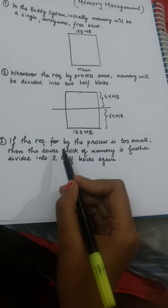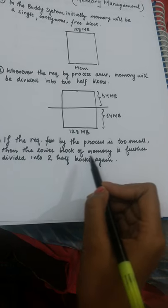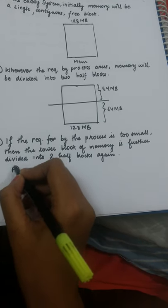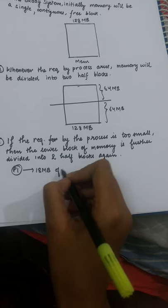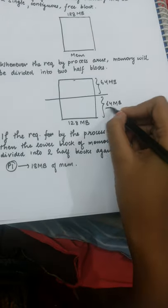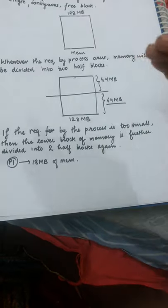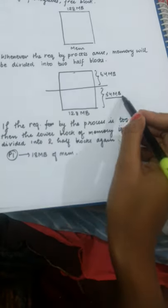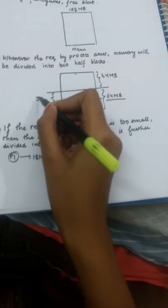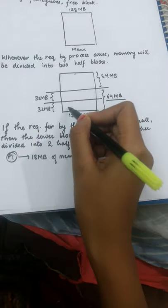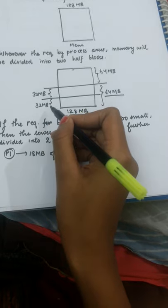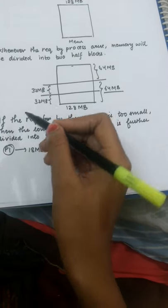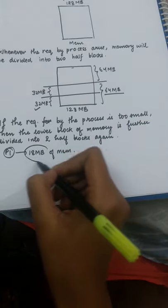The third point is that if the request by the process is too small, then the lower block of the memory is further divided into two half blocks again. Suppose we have a request for 18 MB. We have a partition of 64 MB; if we divide it further, we get 32 MB and 32 MB. If we divide further, we get 16 MB and 16 MB — that requirement would not be fulfilled. So 32 MB is the first optimized solution, and we will be storing the 18 MB process there.